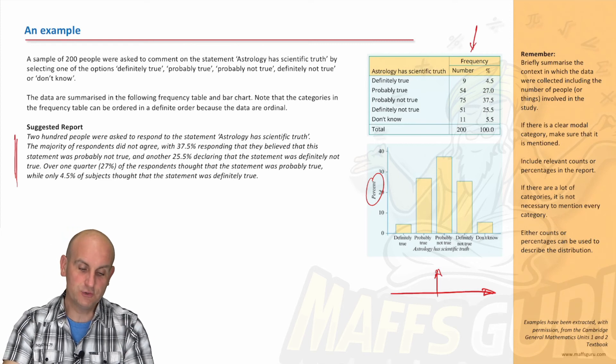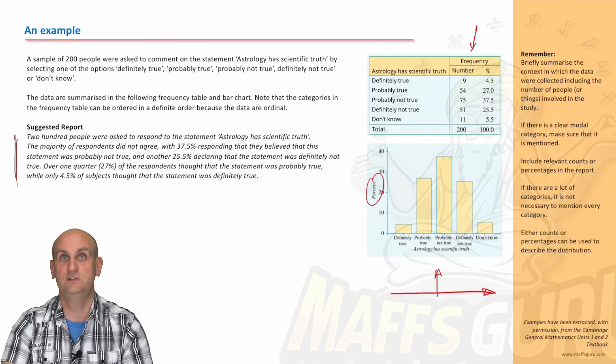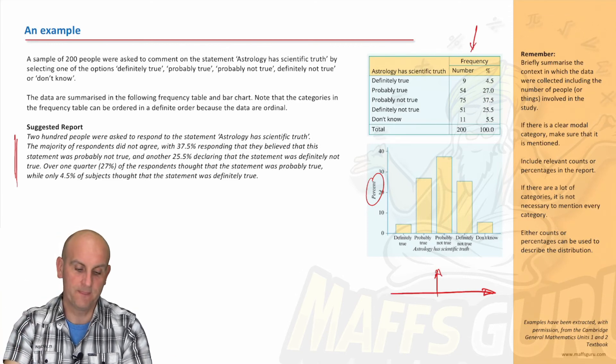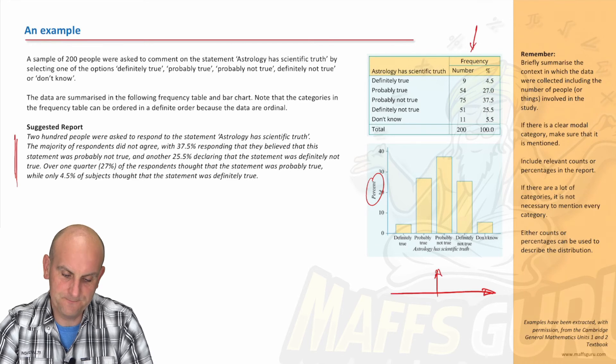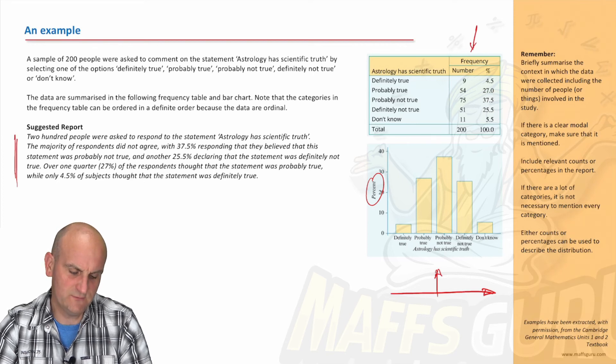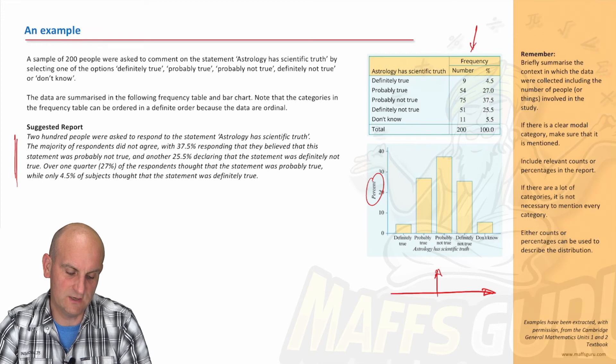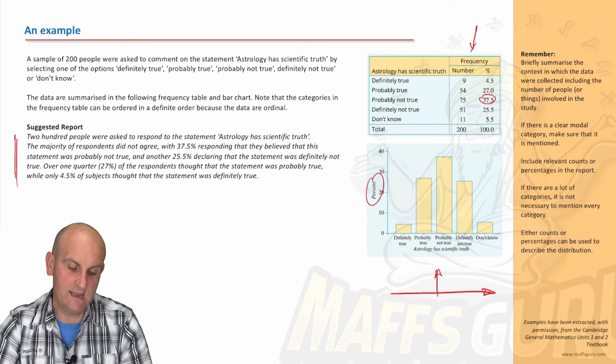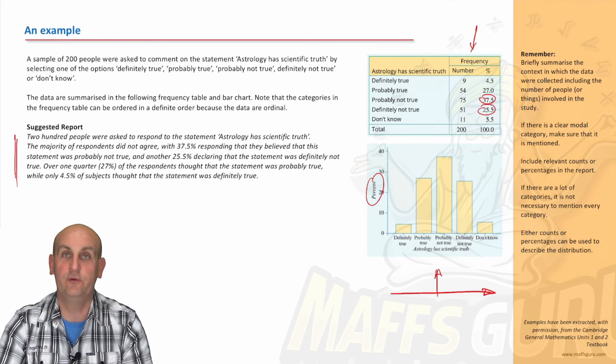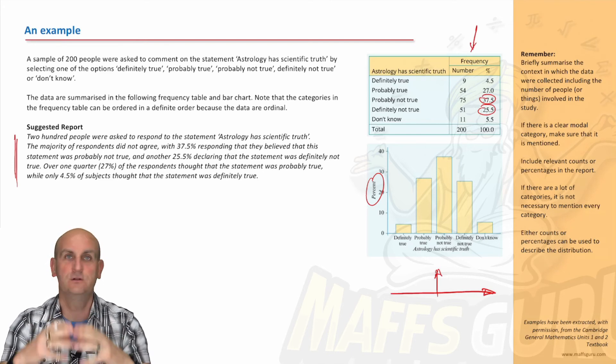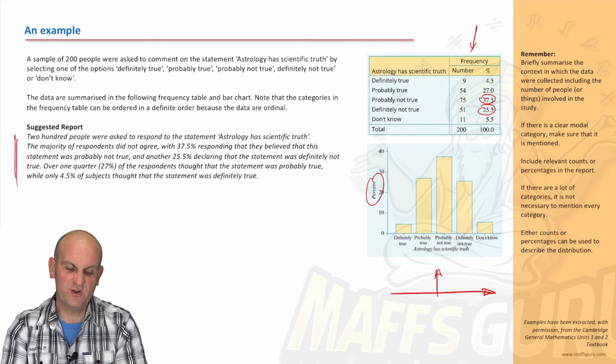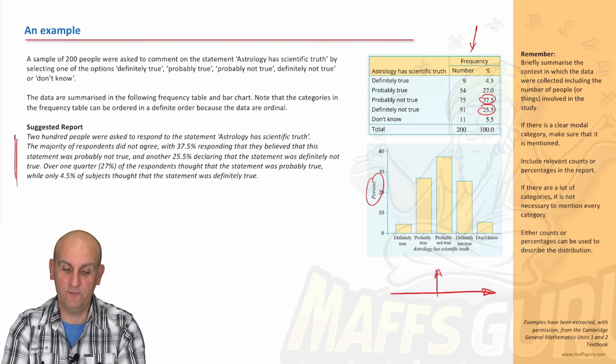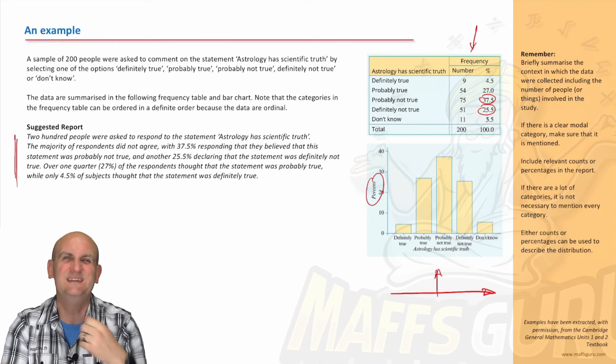Here is the suggested report. 200 people were asked to respond to the statement, astrology had scientific truth. Right from the question, possibly one mark. The majority of student respondents did not agree. How do we know that? Definitely not true. Here we go. 20, probably not true. Hold on a moment. The majority of respondents did not agree with 37.5% responding that they believe this statement was probably not true. And another 22.5% saying the statement was definitely not true. So that's required us now to actually interpret the data, to look at those two values and say, well, actually, if we add those two together, it's a fairly high percentage of the people who say the majority of respondents didn't agree. Could you have just talked about one of those, said, well, the highest one was probably not true, followed by definitely not true? Absolutely.